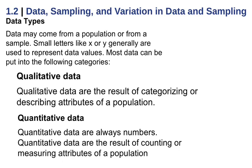For data, there are two types. Qualitative data, which is what we called categorical, and then quantitative data, which is what we called numerical or measurable. So qualitative data, if we're looking at a favorite color, might be something like red. Quantitative data, if we're looking at something like weight, it might be 140 pounds.